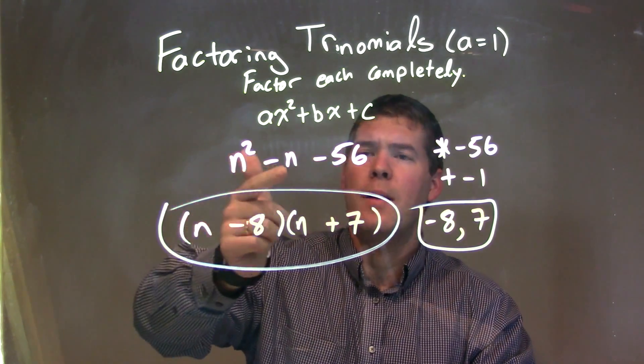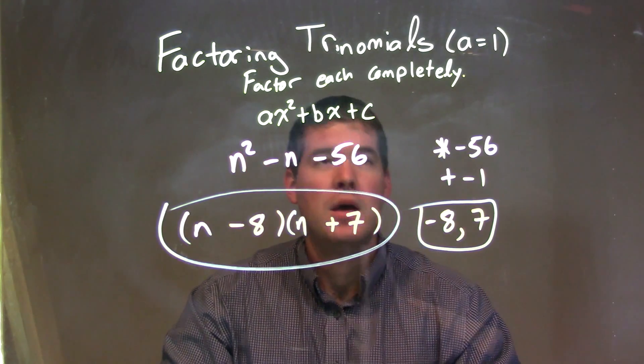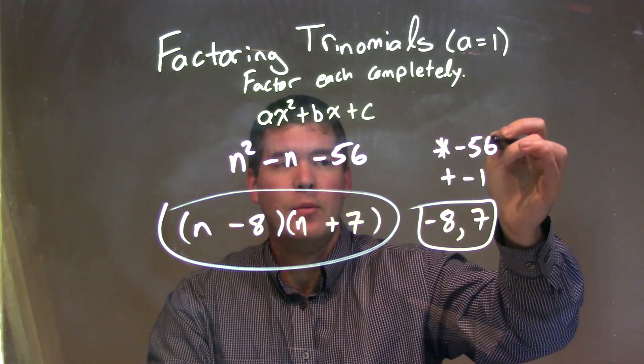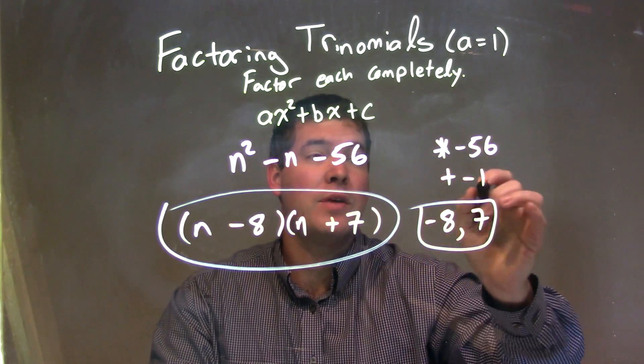So let's recap. We're given n squared minus n minus 56. Our a value was 1, so we asked ourselves the question: what multiplies to be your c value, which is negative 56, and add to be your b value, which is negative 1?